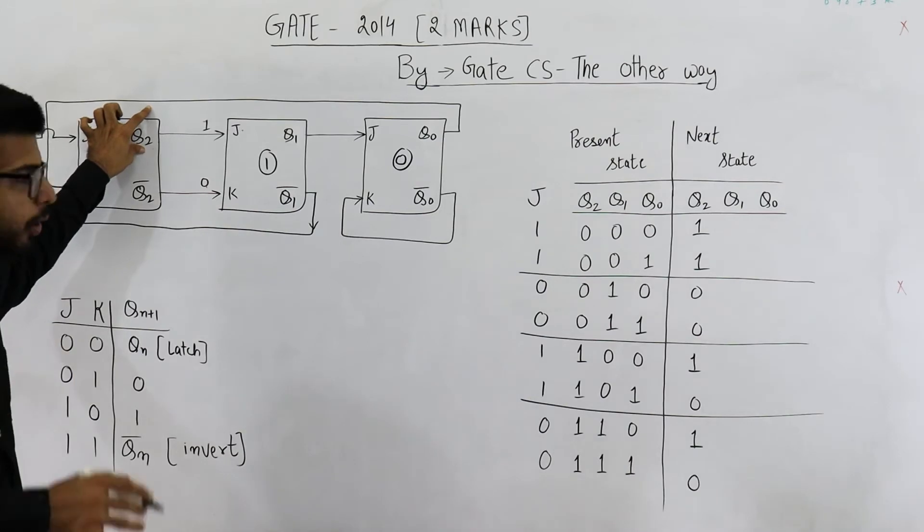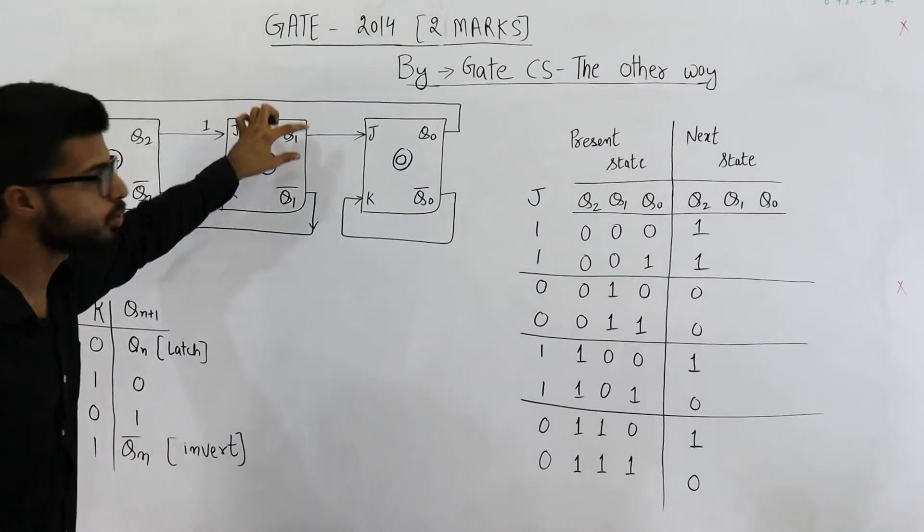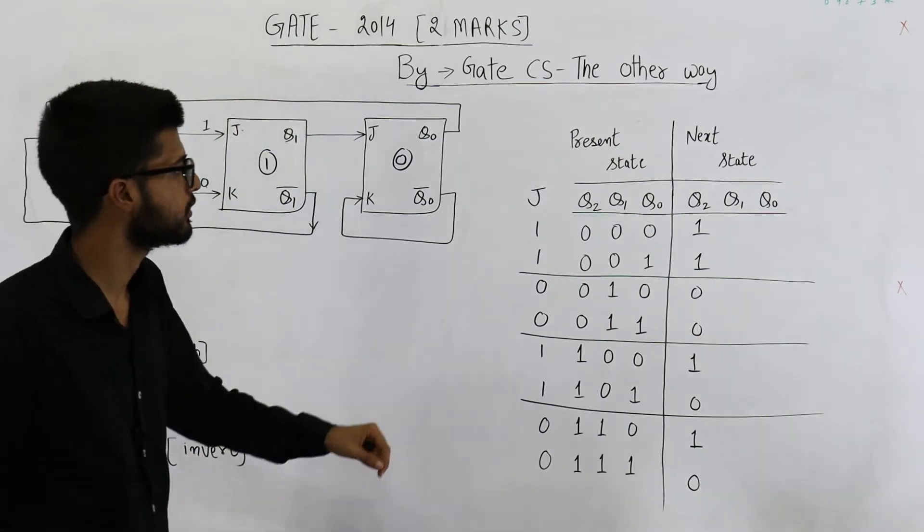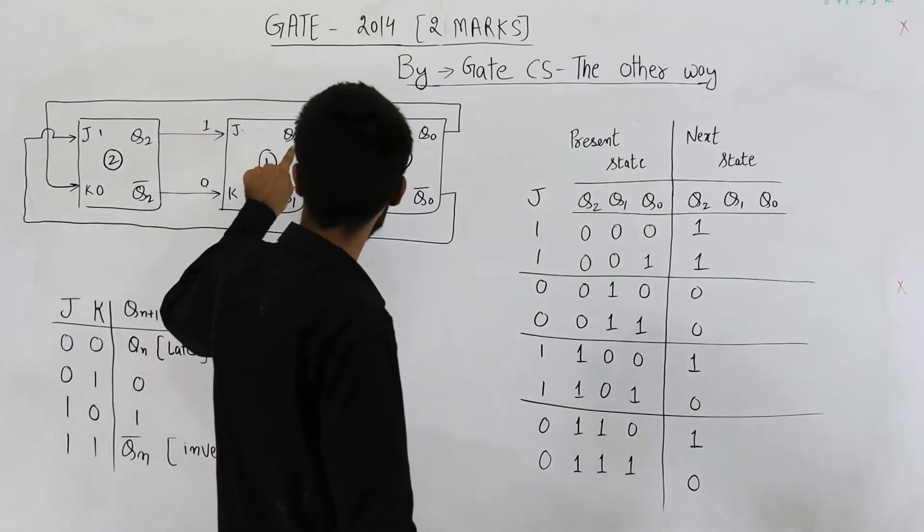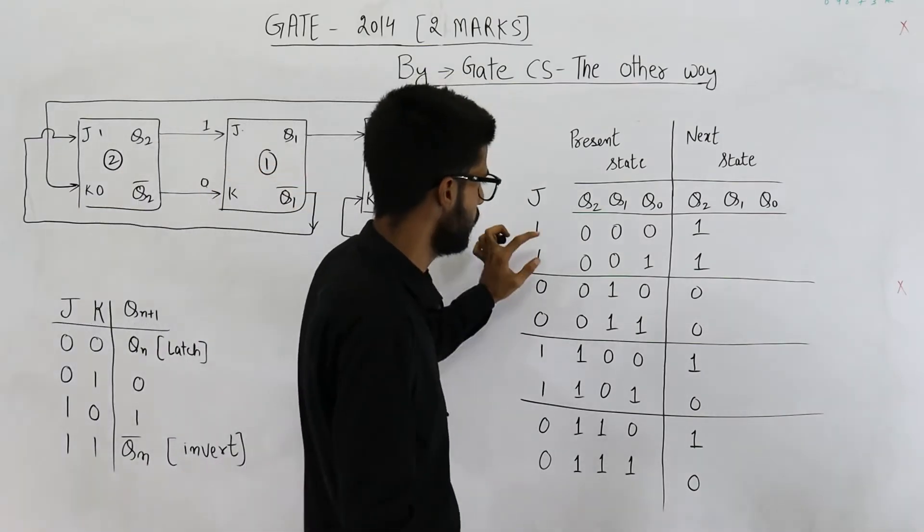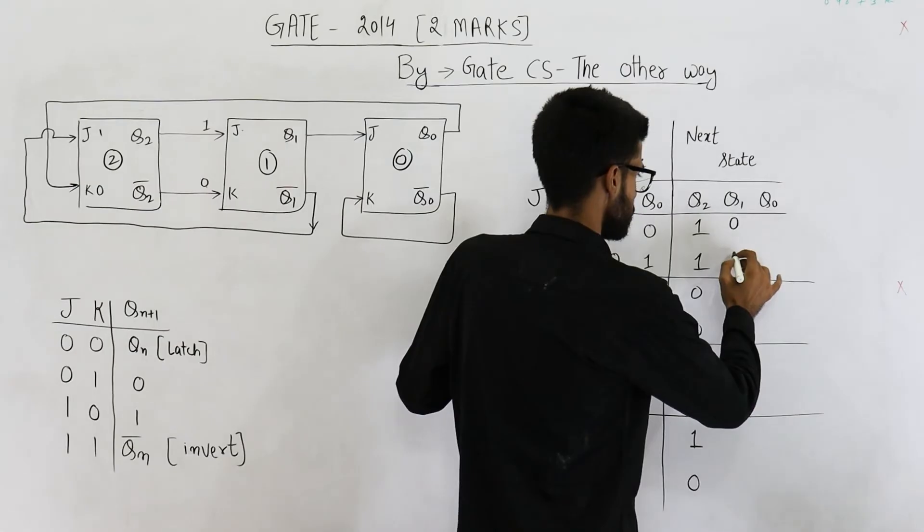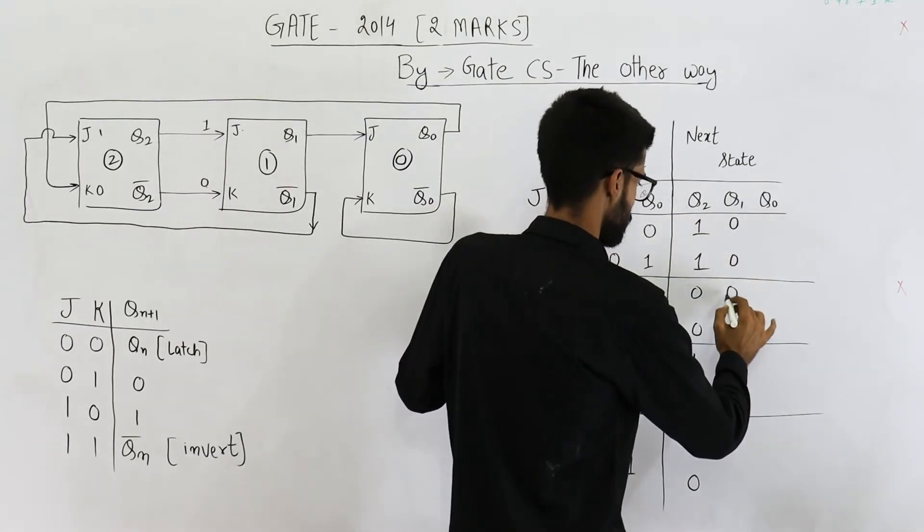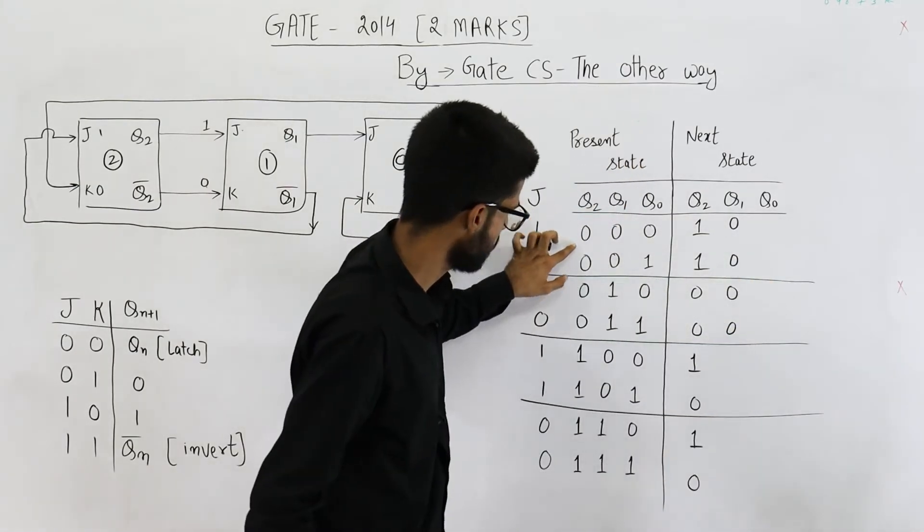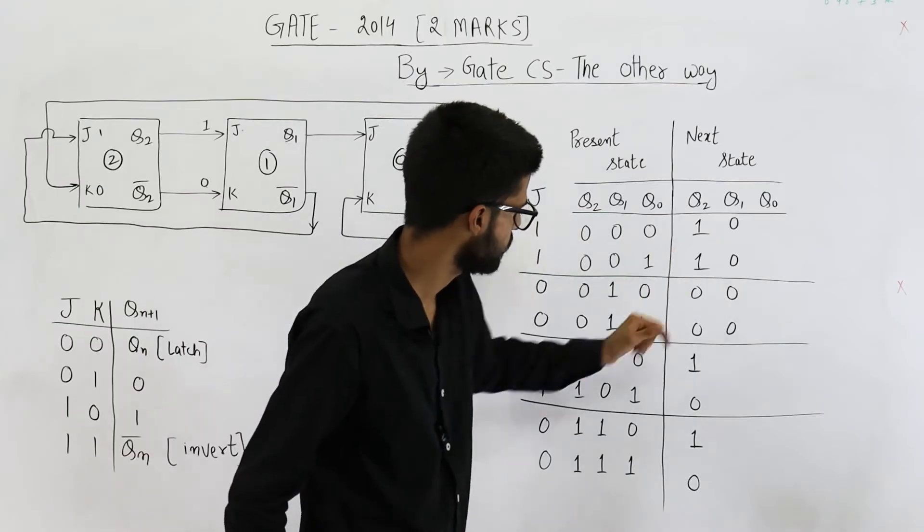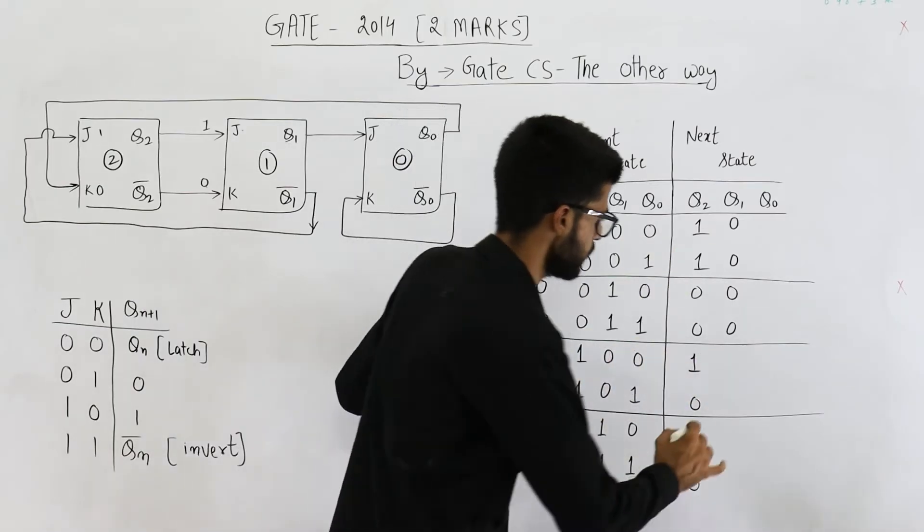If currently Q2 is 1, upon giving a clock, this one will be 1. So let us fill this table. Q2 will be copied as it is in Q1. So it is 0, 0, 0, 0, 0. See, I am just copying the values of Q2 as it is. Then this will be 4 ones.